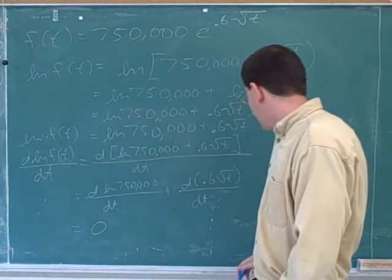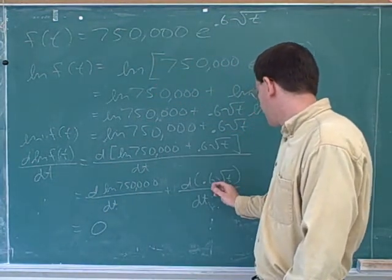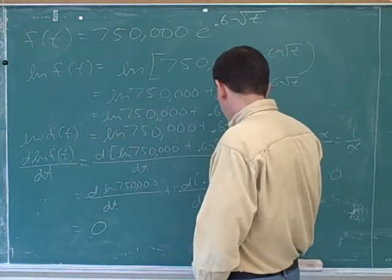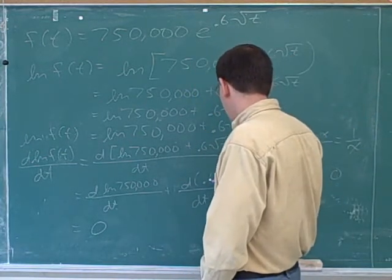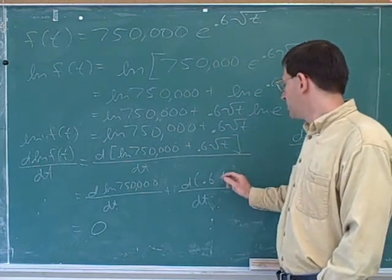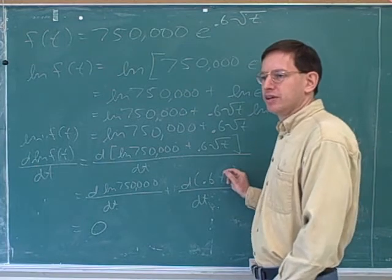All right. And then you might have had a little trouble with this as well. Now, I think that you saw the trick was when you're dealing with square roots, it's better to rewrite it in terms of an exponent. So the square root of t is t to what exponent? One half. Okay.